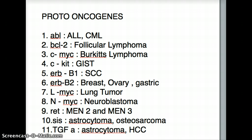Now let's talk about number one. The way I divide it is alphabetically. The first one is ABL — ABL causes ALL and CML. After A we have B: BCL2 causes follicular lymphoma. Follicular lymphoma is a non-Hodgkin's lymphoma, usually found in the lymph nodes as follicles. It's very follicular in shape, and that's very diagnostic for follicular lymphoma.